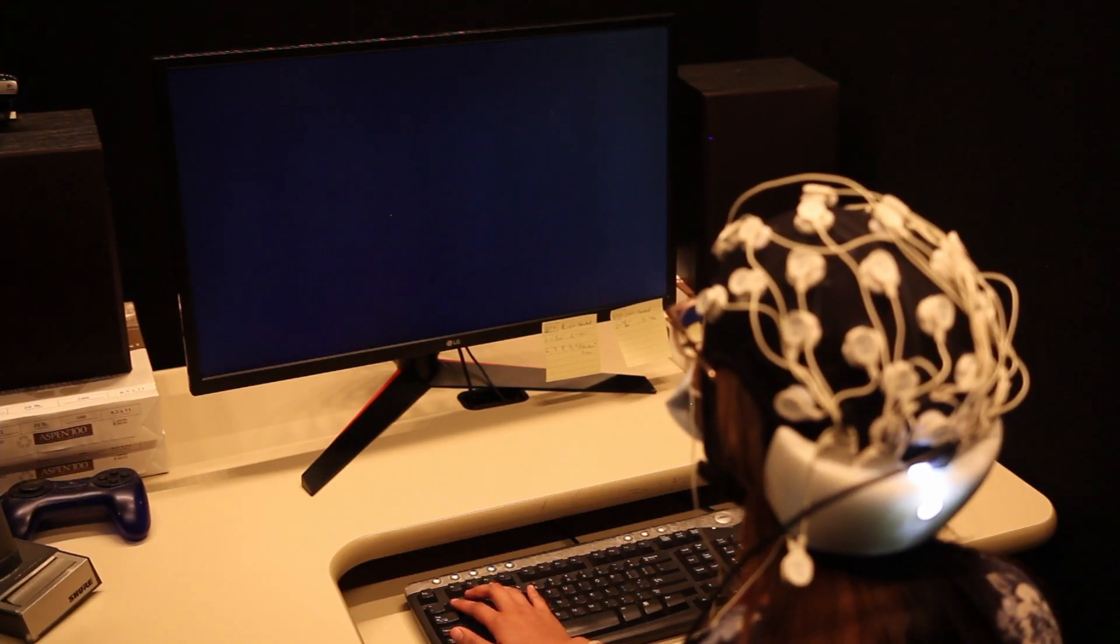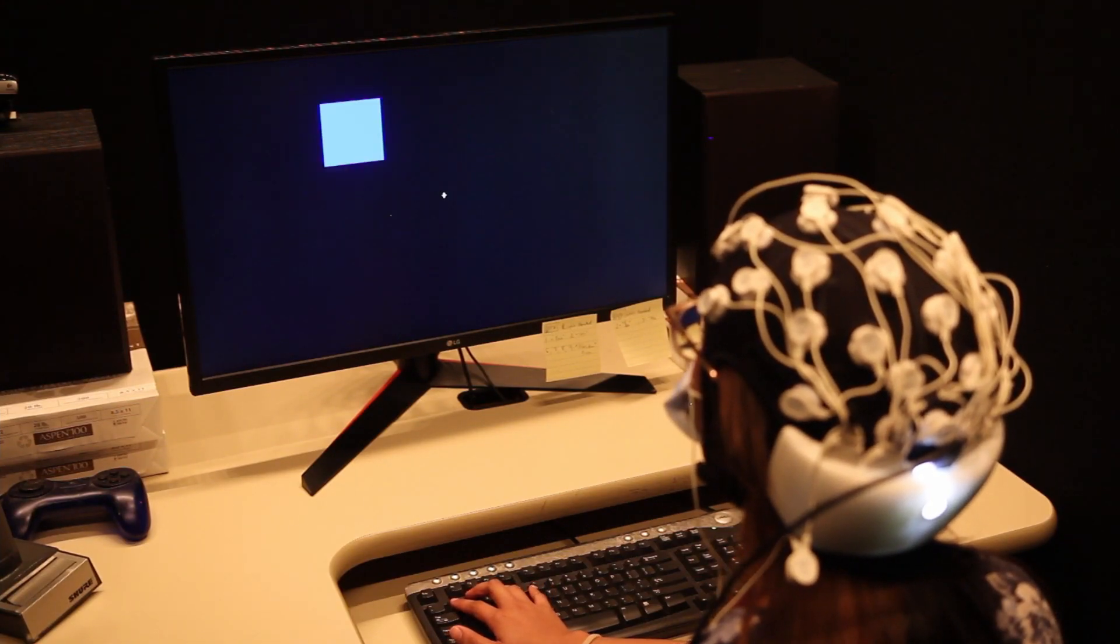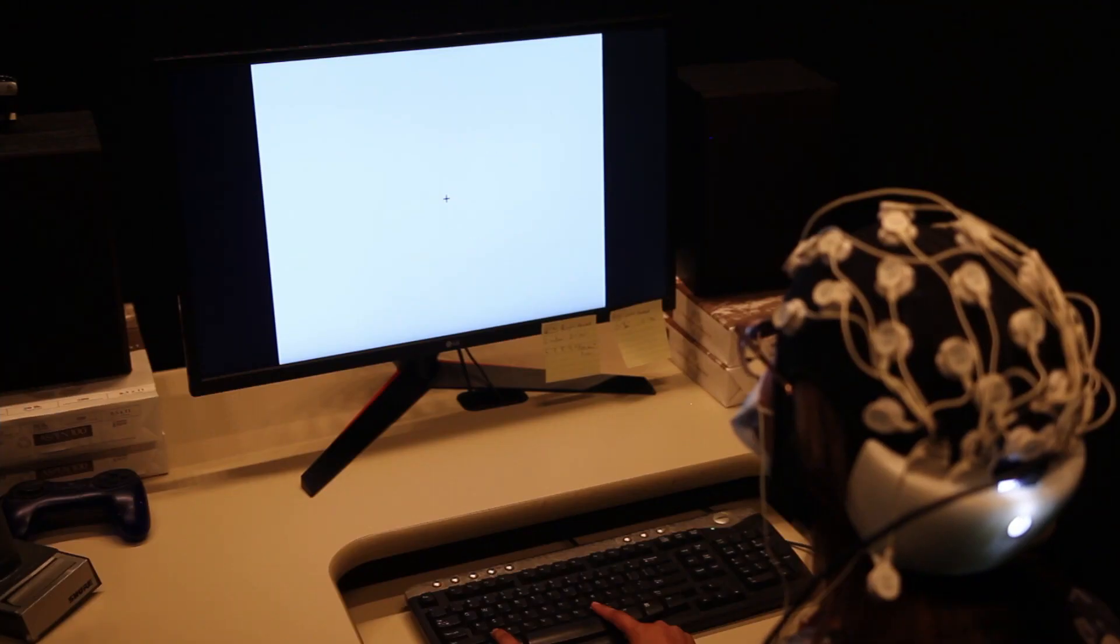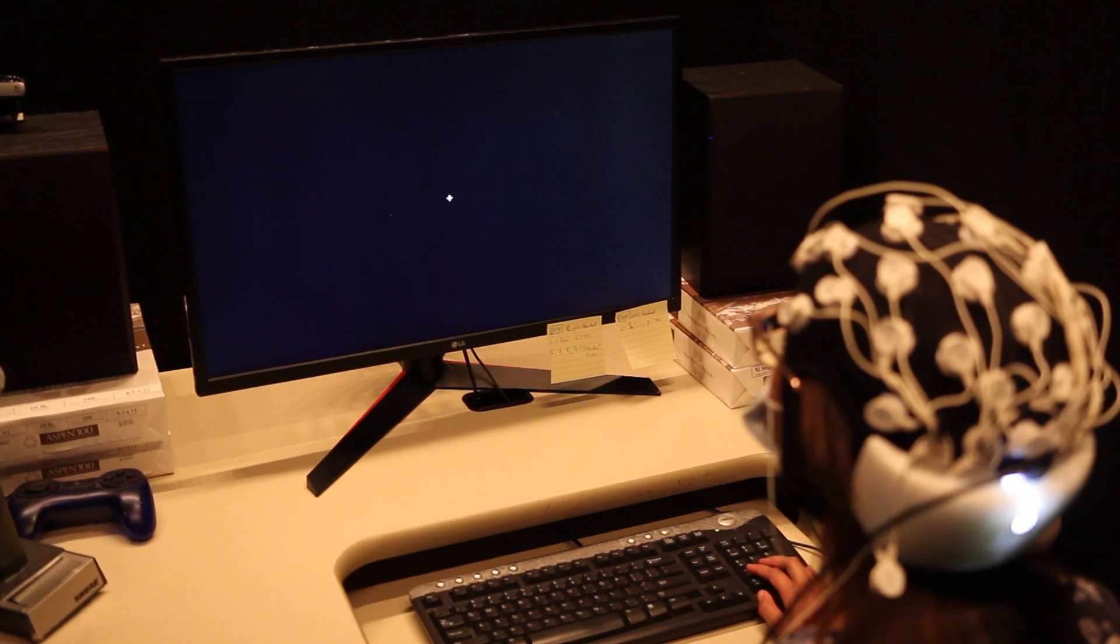TDCS will usually take place for about 20 minutes at the beginning of each session followed by EEG. These recordings will occur either while you are passively resting or completing a computer task.